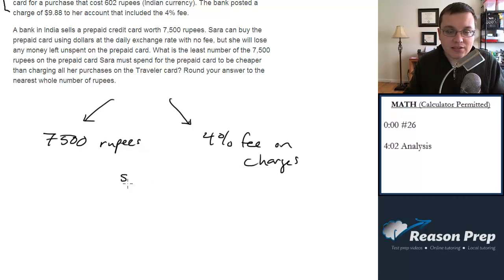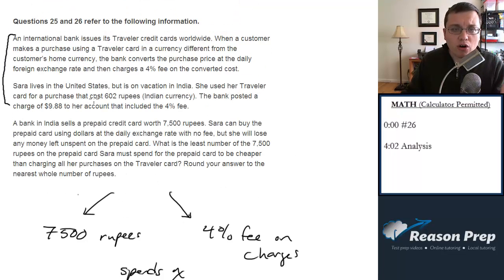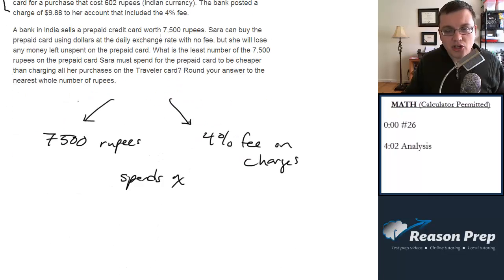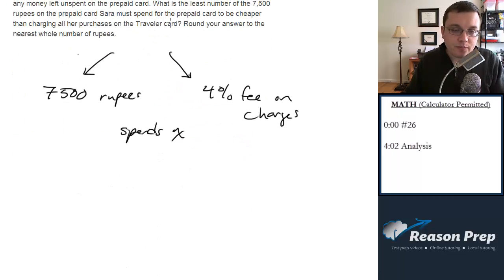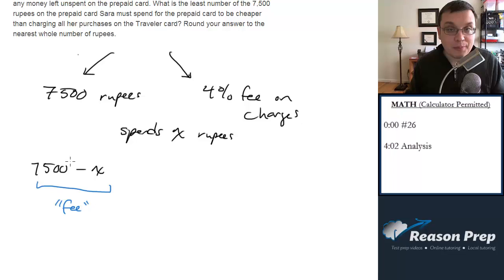Let's assume that she spends X rupees. Note, by the way, the dollars are irrelevant here. The 4% fee that we tack on, it's tacked onto dollars, but in some sense it's tacked onto rupees anyway because it's a ratio conversion. So we can just do this all in rupees. We don't have to worry about the dollars. So she spends X rupees. Okay, so how many rupees is she left over with? So if she has 7,500 and she spends X, this is in her some sense her fee, right? This is what's left over. This is what she can't recover. This is how much it costs her to use that prepaid card.